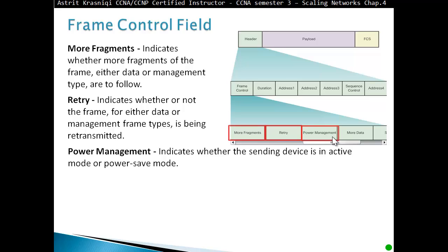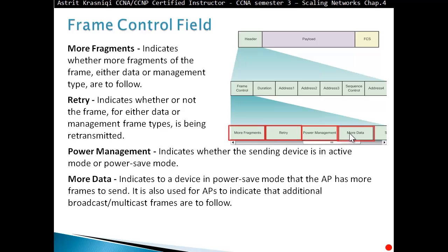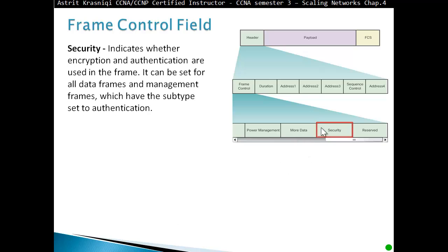Power management field indicates whether sending device is in active mode or power saving mode. More data field indicates to device in power save mode that the access point has more frames to send. It's also used for access point to indicate additional broadcast/multicast frames are to follow. Security field indicates whether encryption and authentication are used in the frame. Reserved field indicates that all received data frames must be processed in order.